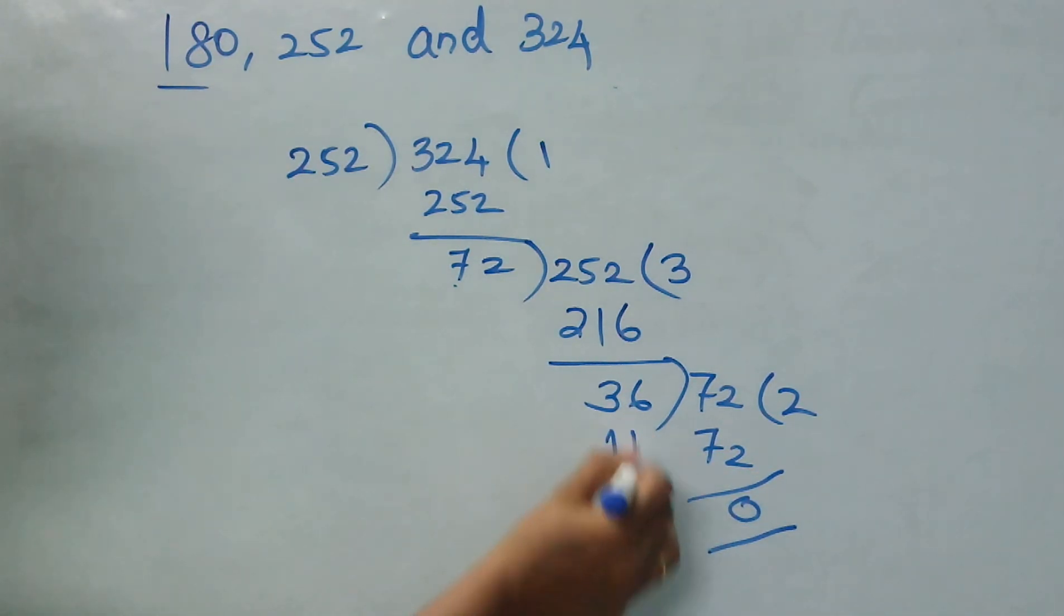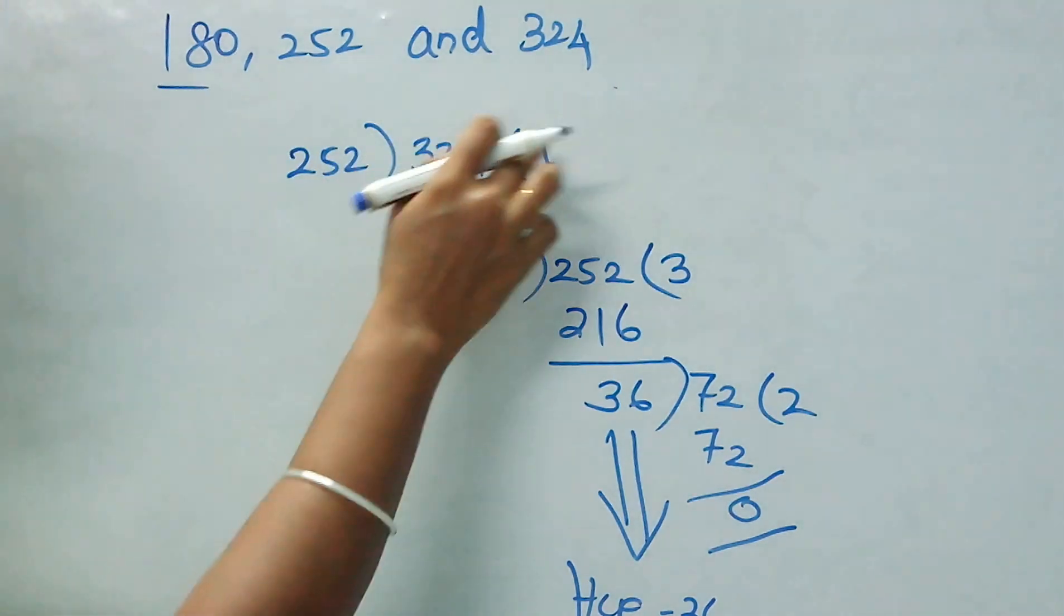Now, our remainder becomes 0 which is none other than HCF equal to 36 for these two numbers.